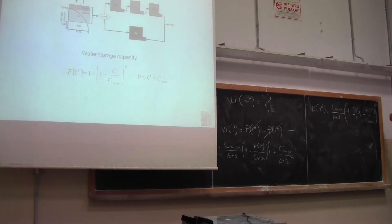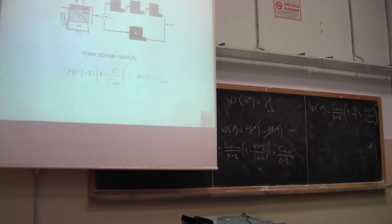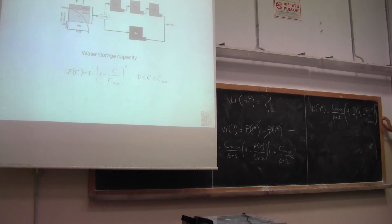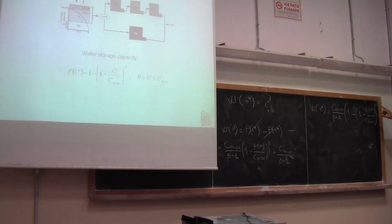So W(T*) equals Cmax divided by beta plus 1, multiplied by 1 minus (1 minus P(T*) divided by Cmax) to the power of beta plus 1. This is the storage in the catchment. Remember that this works as long as you neglect evapotranspiration and as long as cumulative precipitation is lower than Cmax. Otherwise it doesn't work.